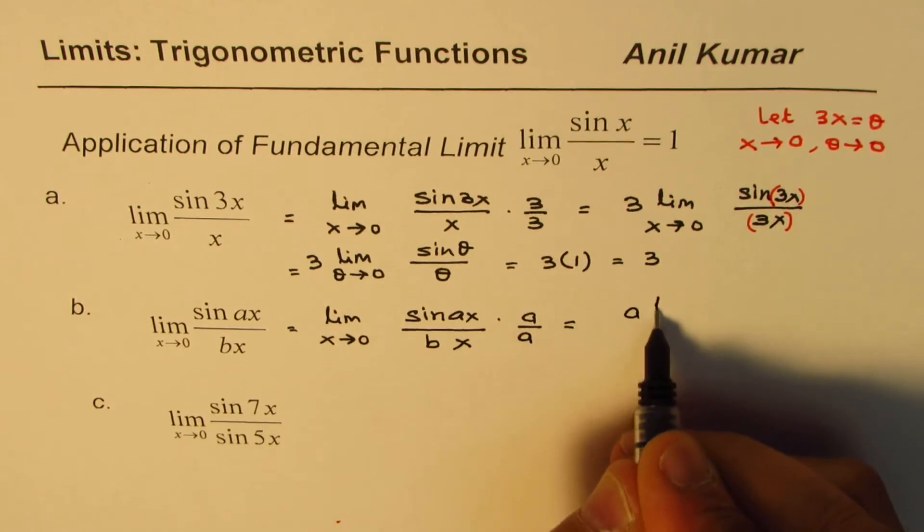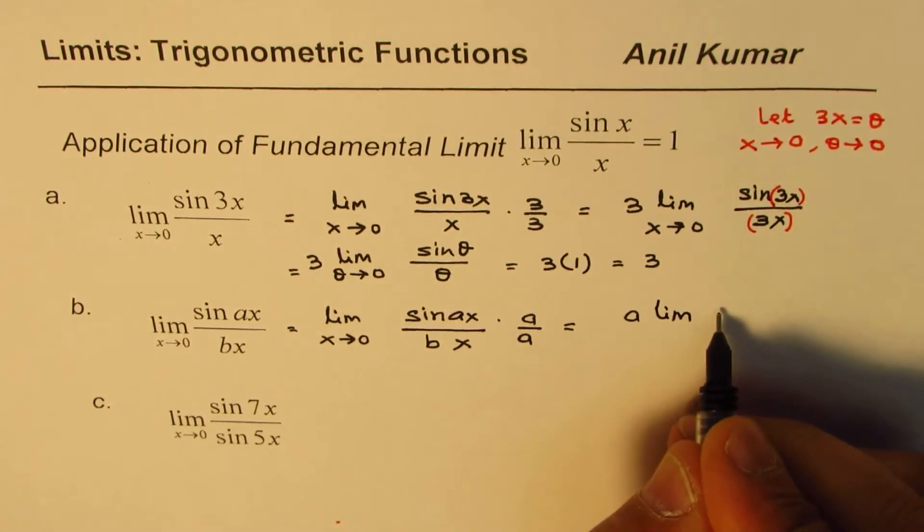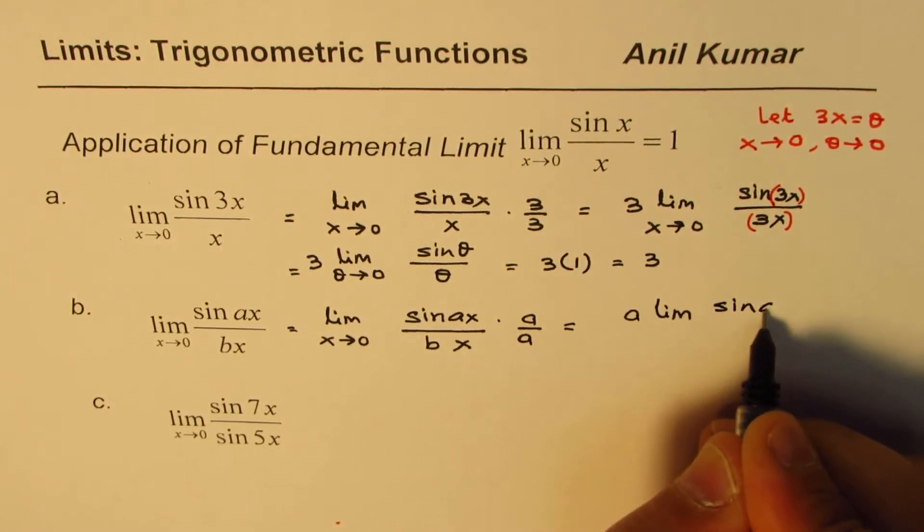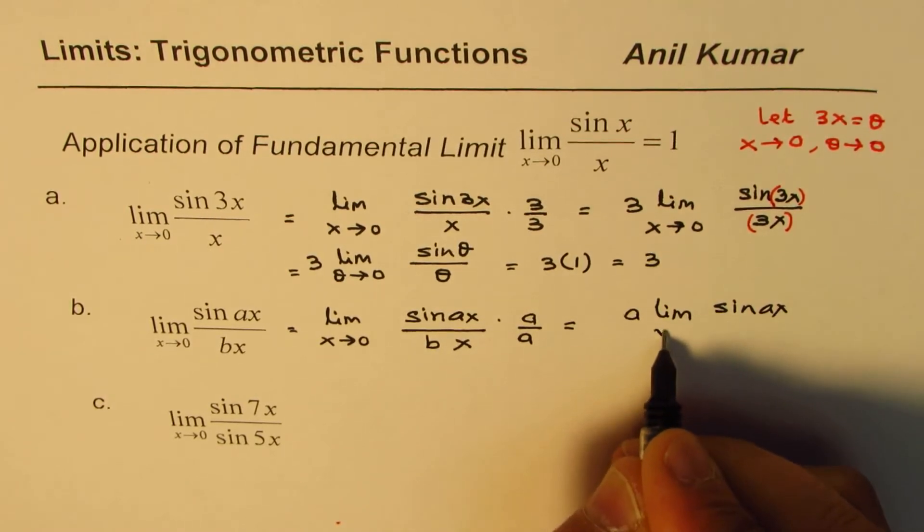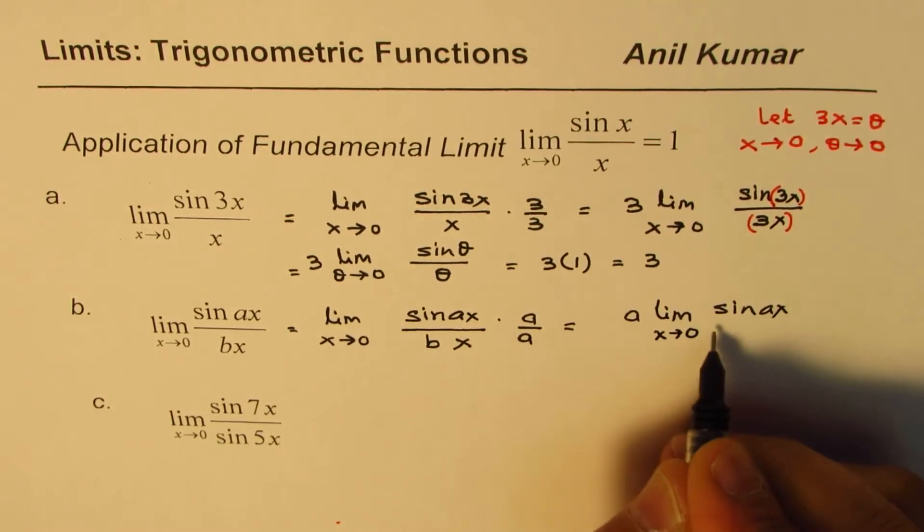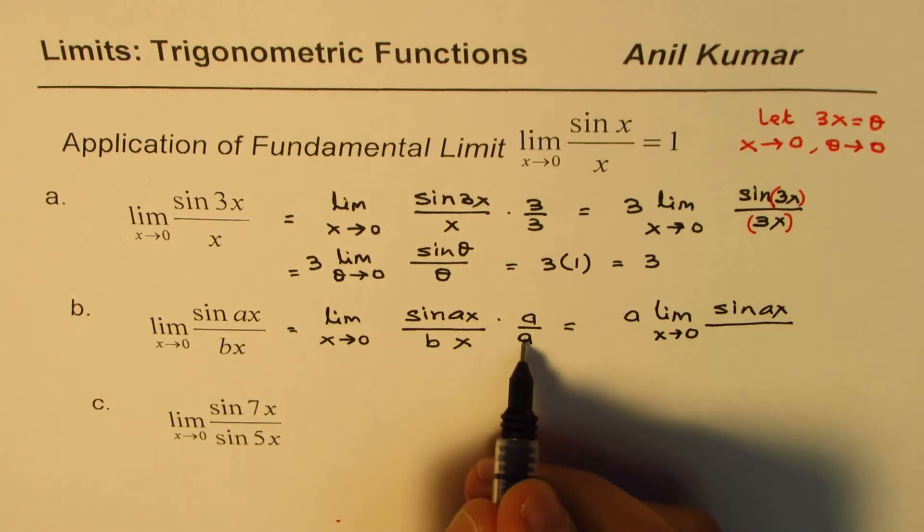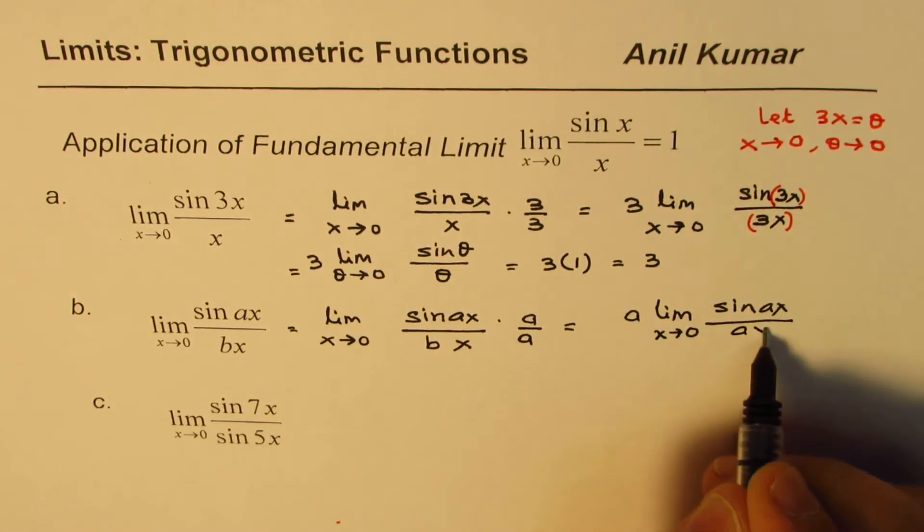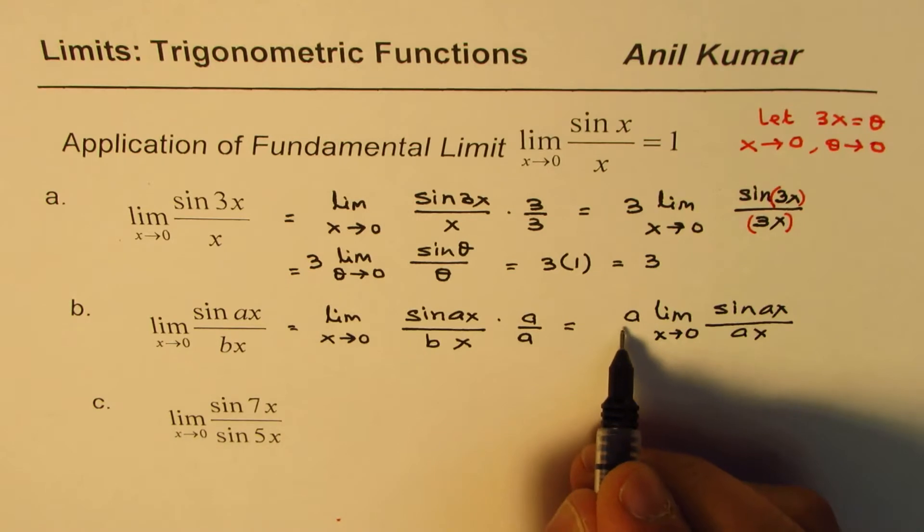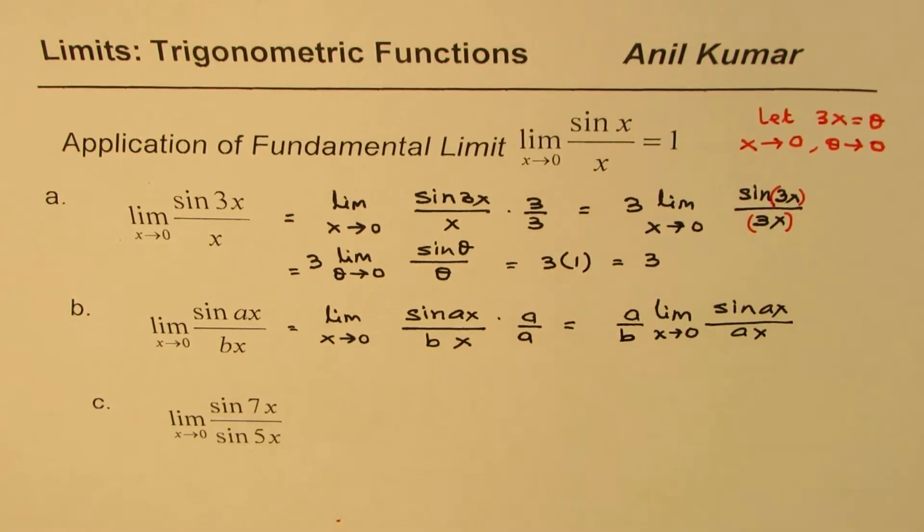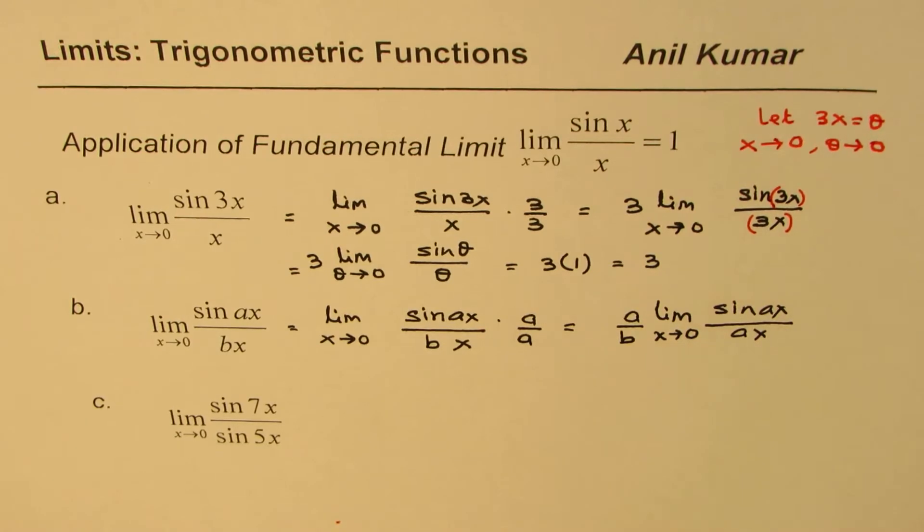Now a is a constant. I can write it outside. So a limit sin ax. This is limit when x approaches 0. And in the denominator, I'm writing a times x. b is a constant. I'm writing it outside. So I'm writing this as a over b.